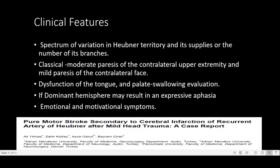What are the clinical features of Heubner's infarct? There is a spectrum of variation in its territory, supply, and number of branches. The classical presentation is a faciobrachial paresis — moderate paresis of the upper extremity and mild paresis of the contralateral face. There could be dysfunction of the tongue and palate. If it is the dominant hemisphere, it could even result in expressive aphasia. There could also be emotional and motivational symptoms. Bilateral Heubner-territory infarct can result in akinetic mutism.